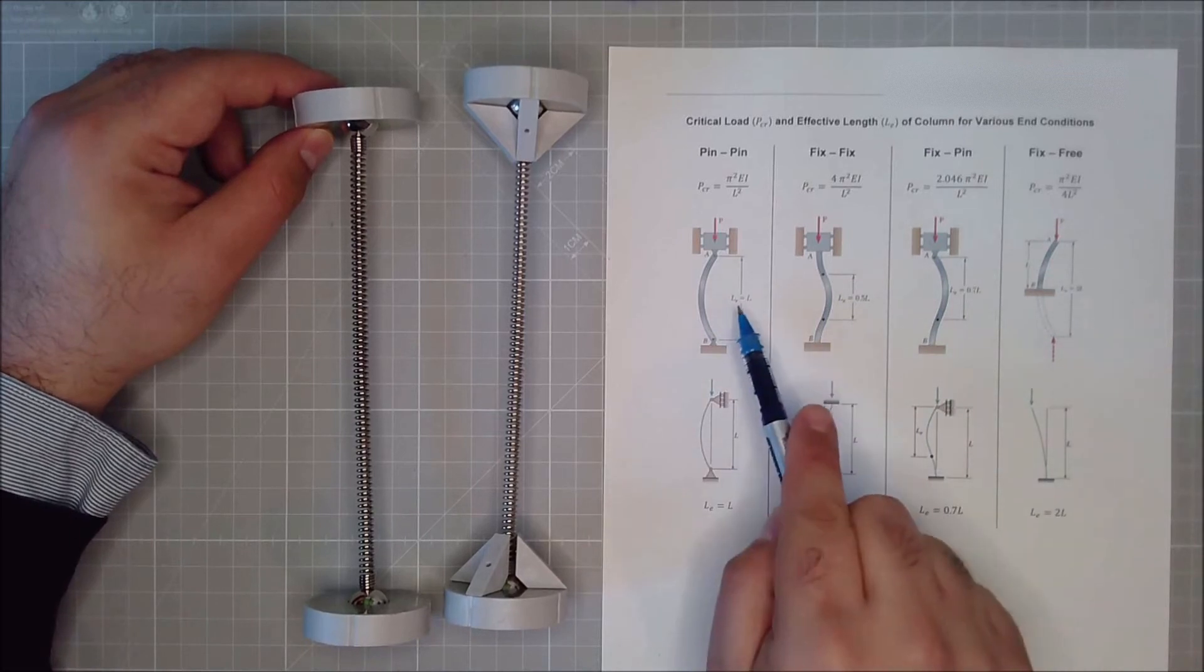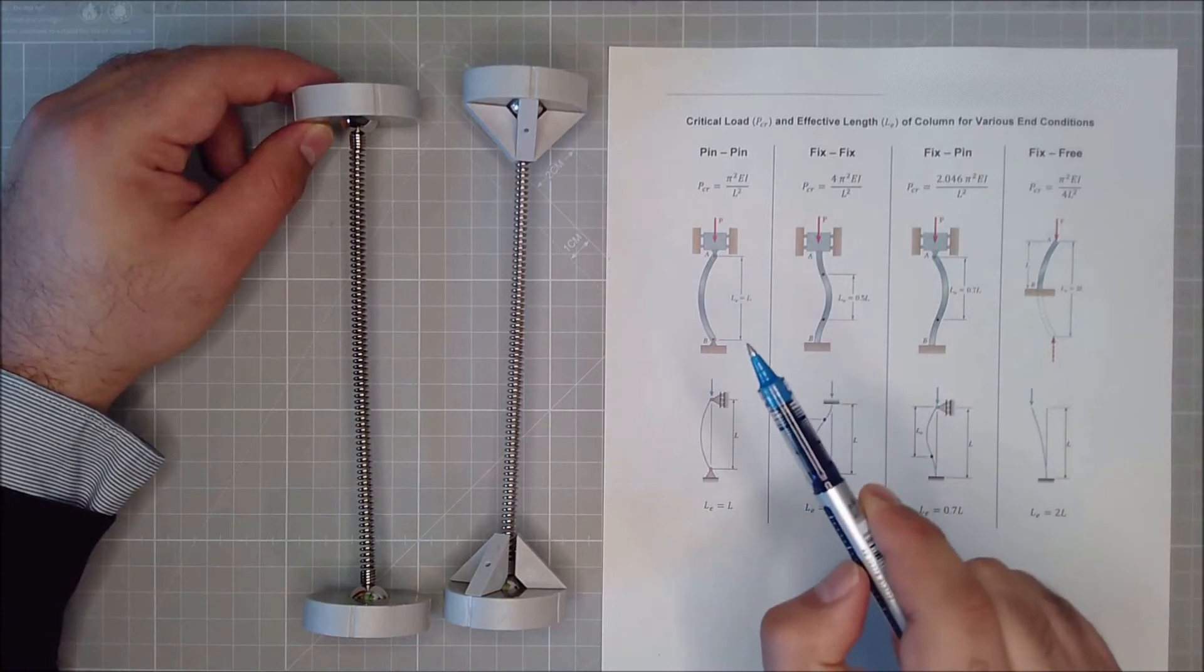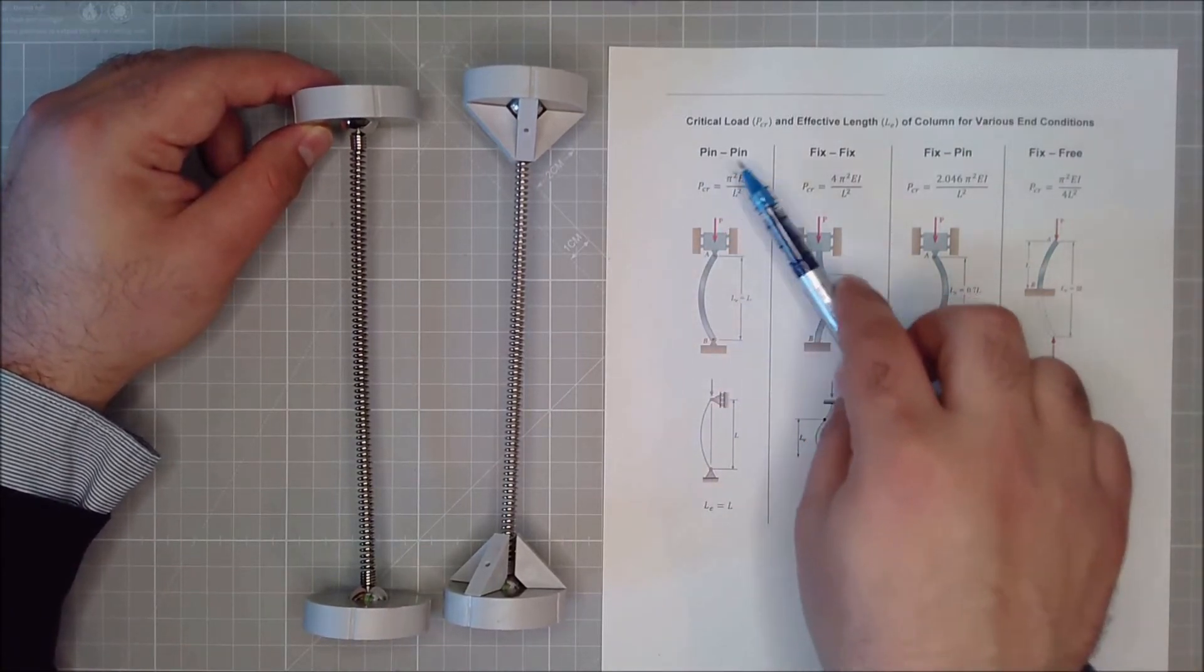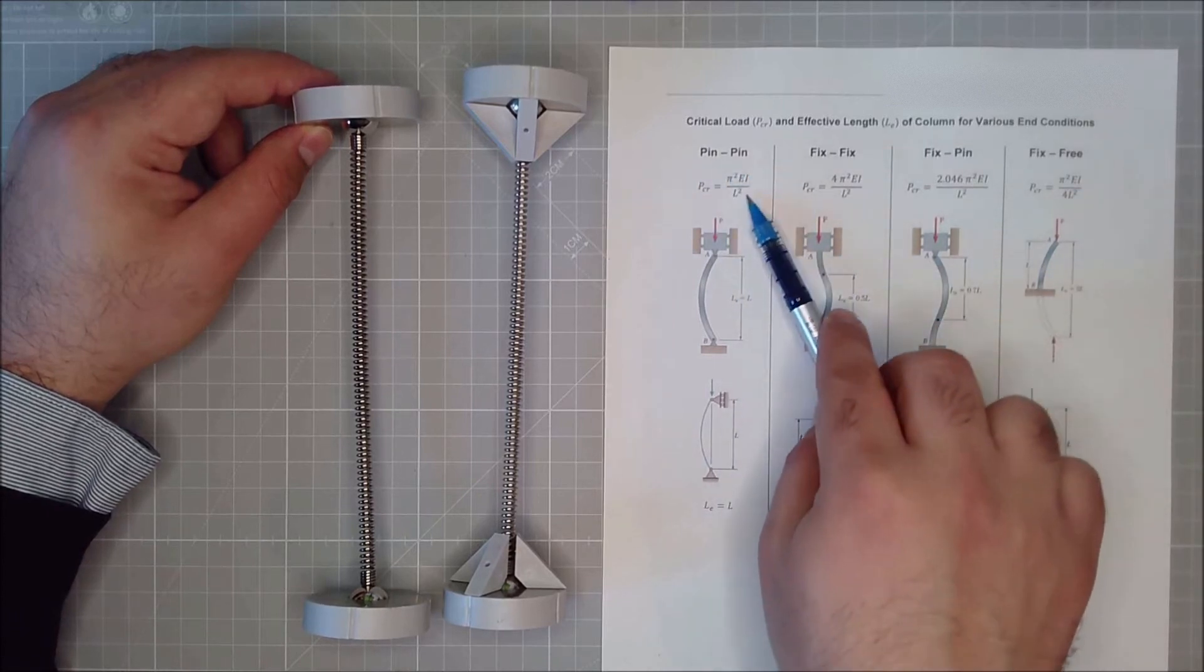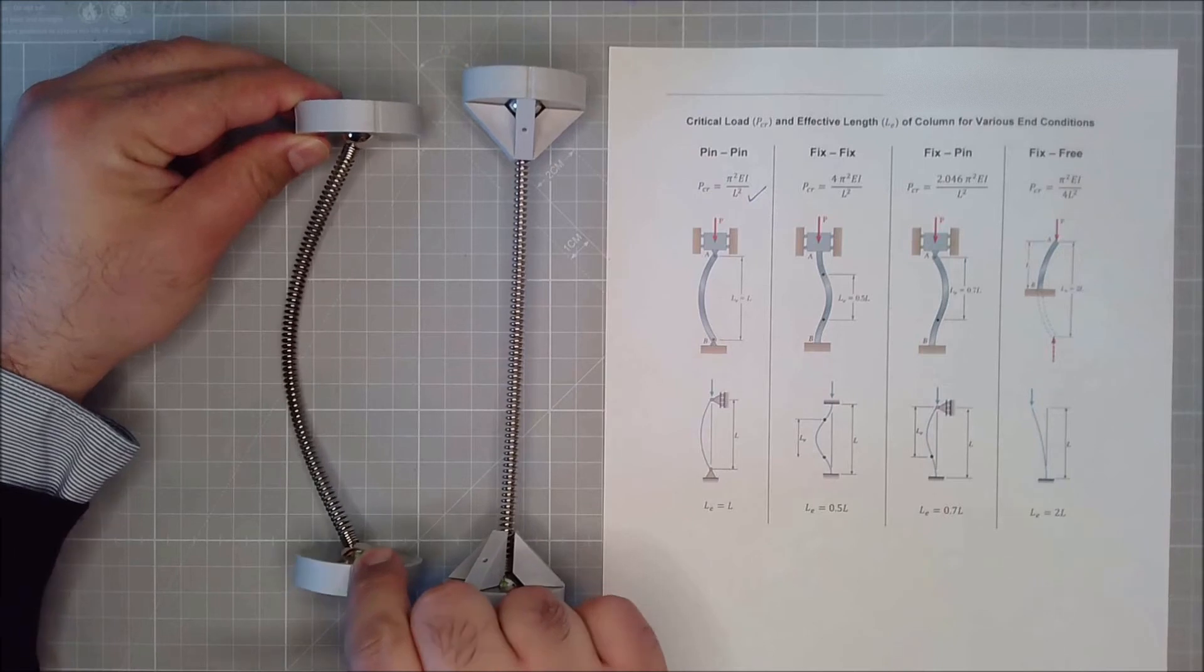And because LE, the effective length changes, your critical load and the critical stress will change accordingly as well. So let's have a demonstration. So pin pin, this is where we calculated the formula, as you can see, is exactly the same formula that we have. And it was something similar to this.